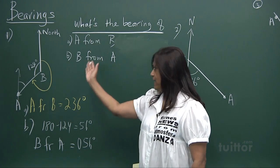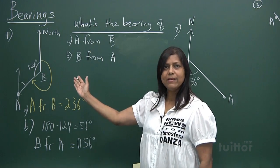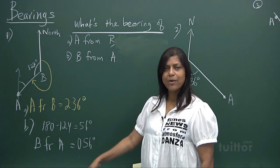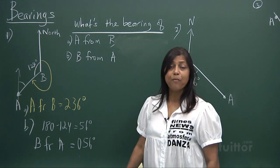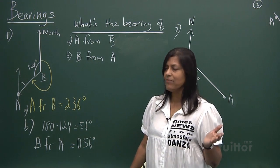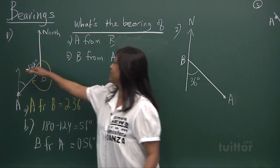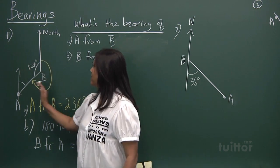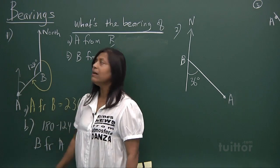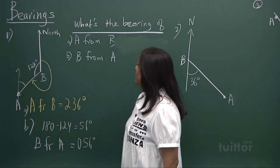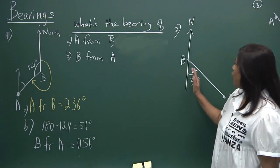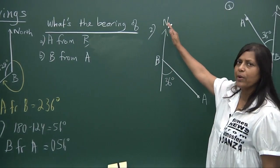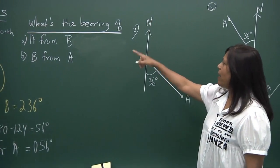North east is 90 degrees, south is 180 degrees from north, and west is 270 degrees. Now let's look at a second example where north is given in a specific direction.